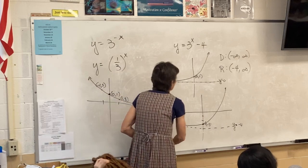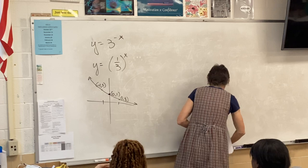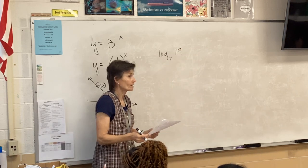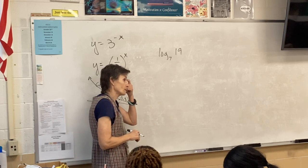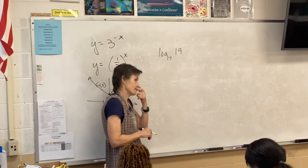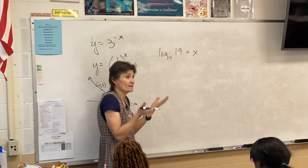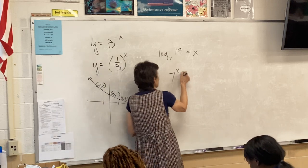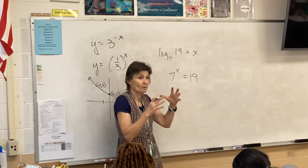The little stars next to this mean calculator. Log base 7 of 19. A couple different ways to do this. One option is to set it equal to x. That's what you're trying to do is figure out what it equals. So then what? Log to log. So 7 to the x equals 19. Anytime I have log equals a number, I'm going to log to log.